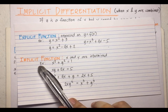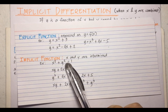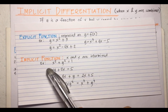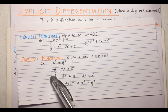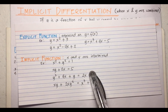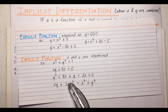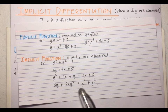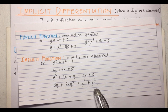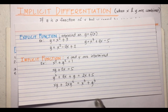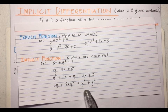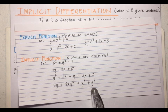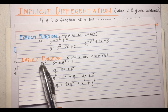On the other hand, it is an implicit function when x and y are intermixed. Examples: x² + y² = 1, xy + 2x = 5, y³ + 4x + y = 2x + 5, or xy + 2xy² = x³ + y³. We can see that on one side of the equation, or both sides, x and y are mixed — and we call that an implicit function.